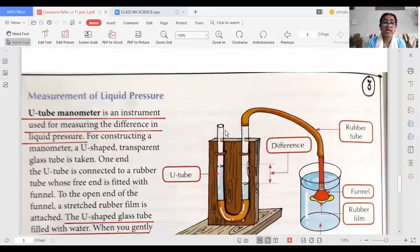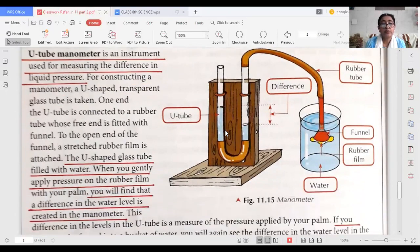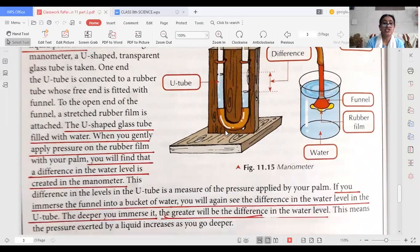Now liquid pressure is always measured by an instrument which is known as manometer. U-tube manometer. It is a U-shaped glass tube which is filled with water. Then you gently apply pressure on the rubber film with your palm.